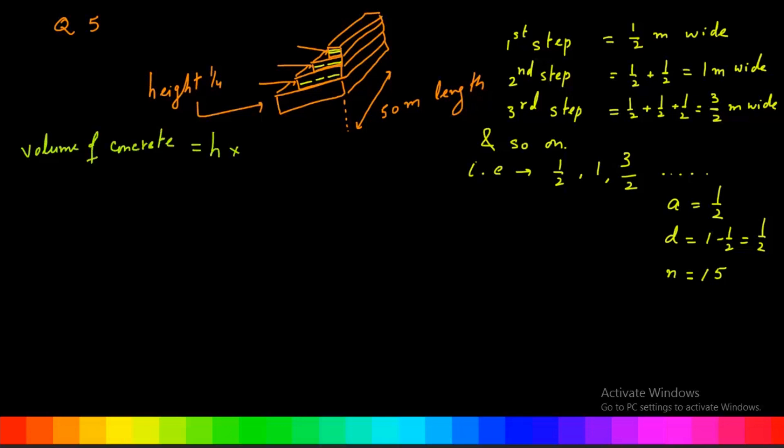That is H multiplied by L multiplied by W. W is the total width of all these steps. W or S_N is equal to N/2 times (2A plus (N minus 1) times D).